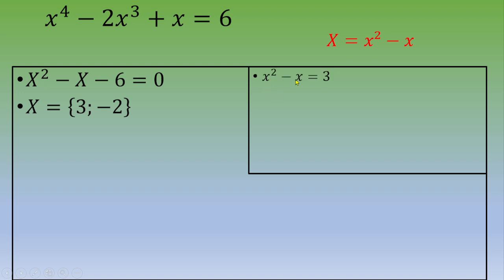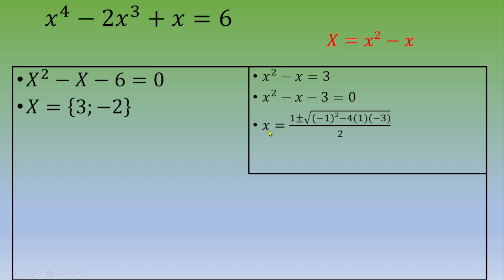Case 1: x² - x = 3. Moving 3 to the other side gives x² - x - 3 = 0. The discriminant is Δ = (-1)² - 4(1)(-3) = 1 + 12 = 13. So x = (1 ± √13) / 2, giving two real roots.